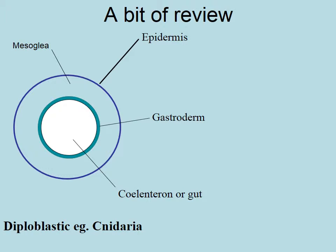And those two tissue layers, which are the only two living layers, are separated by the non-living mesoglia in the center, which gives structure and shape and keeps those two layers apart. And those enclose the gut cavity, where food is processed.